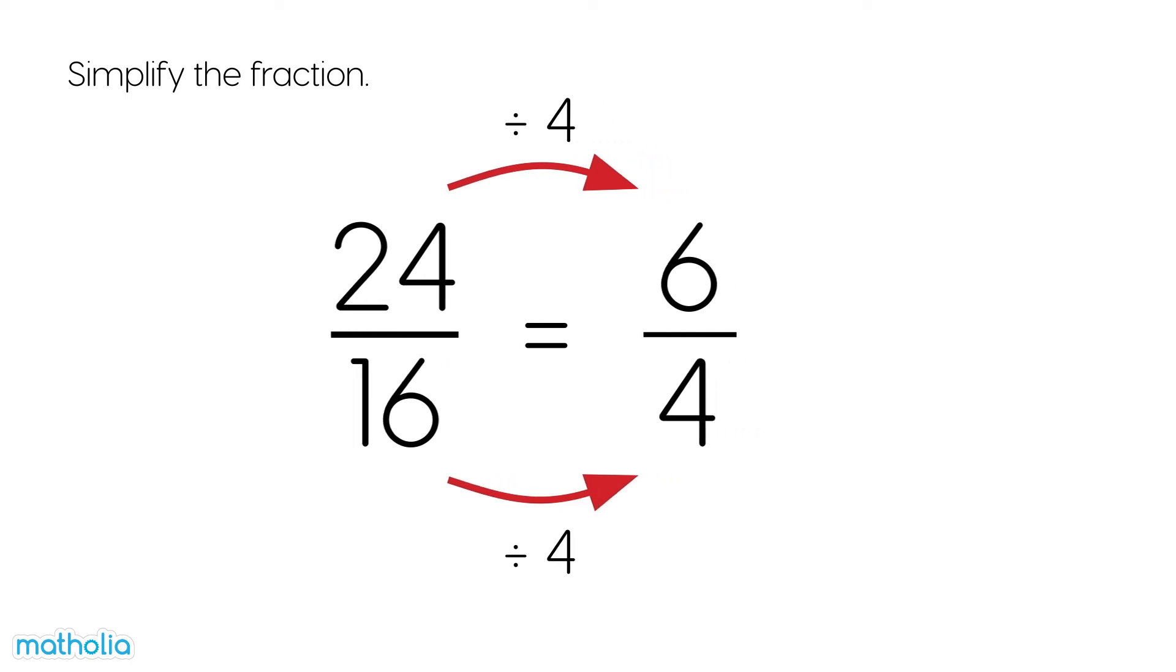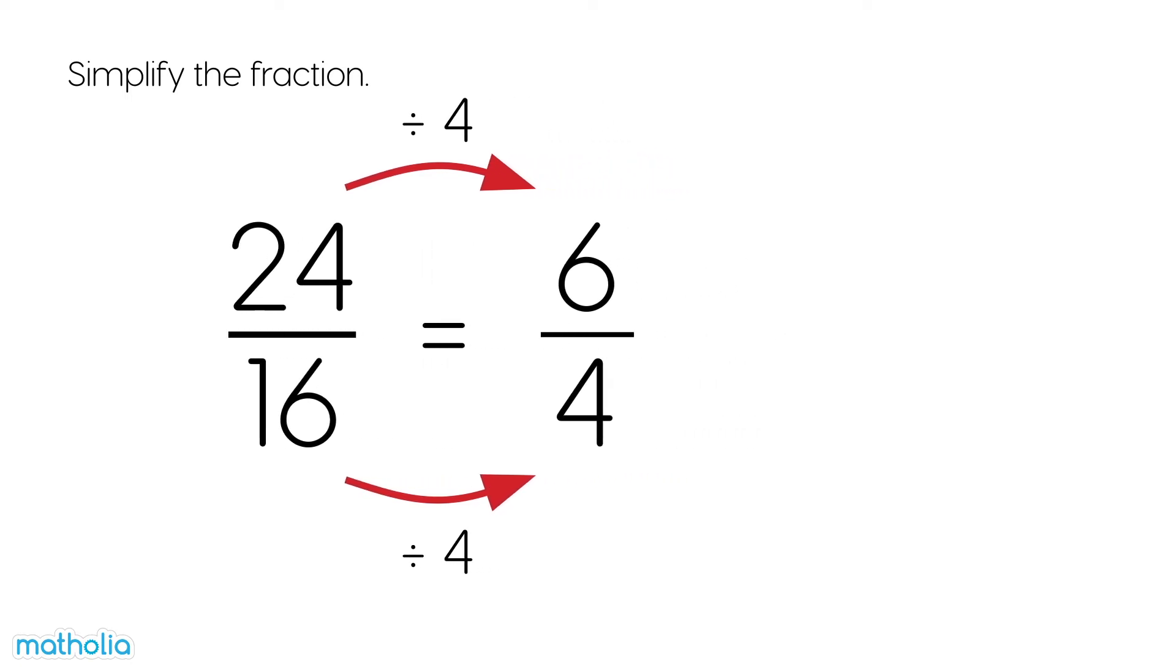We can simplify 6 quarters further. We can divide the numerator and the denominator by 2. 6 divide 2 is 3. 4 divide 2 is 2. 3 halves is in its simplest form. So, 24 sixteenths equals 3 halves.